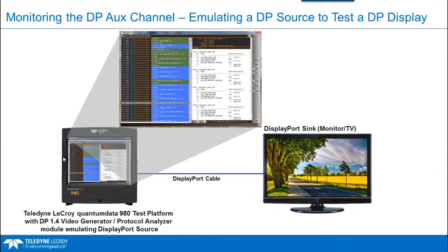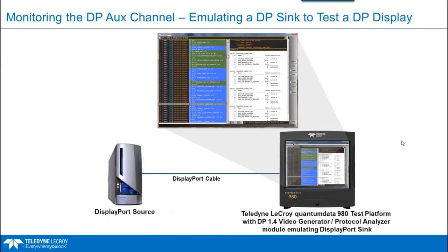Link training has two phases: clock recovery and channel equalization, which also includes symbol lock and inter-lane alignment. If the content is flagged as needing protection, the HDCP authentication protocol is pressed into service to verify the sink.